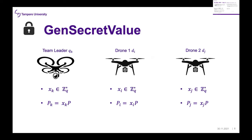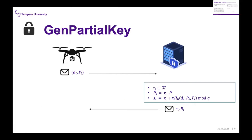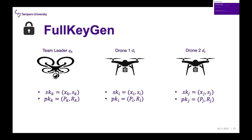The generate secret key value function is undertaken by each entity — the edge drone or team leader — which generates its own secret key and its own public key based on that secret key. We consider these as the partial secret key and partial public key generated by the entity itself. For the generate partial key algorithm, each entity sends its identity and initial partial public key to the KGC. The KGC generates the other partial public key and partial secret key and sends them back. The drone then generates its full public key and full private key based on both sets of partial parameters.